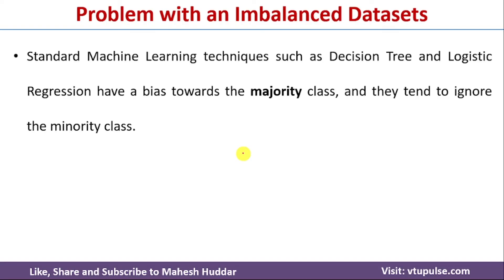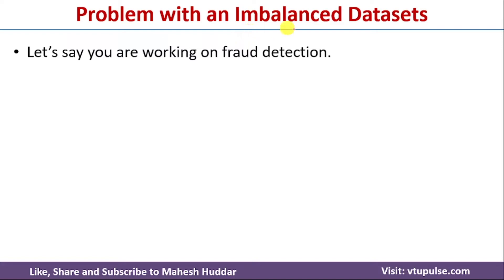The main problem with imbalanced datasets is that standard machine learning techniques such as decision trees and logistic regression have a bias towards the majority class. They tend to ignore the minority class and learn only from the majority class examples, or try to memorize those majority class examples while ignoring the minority class.